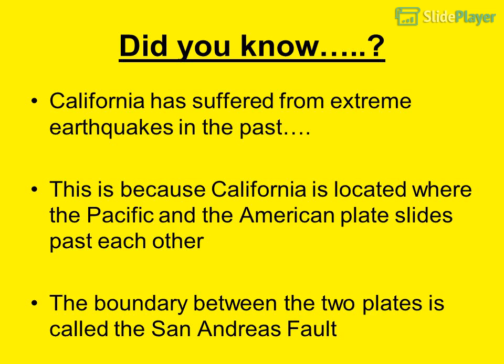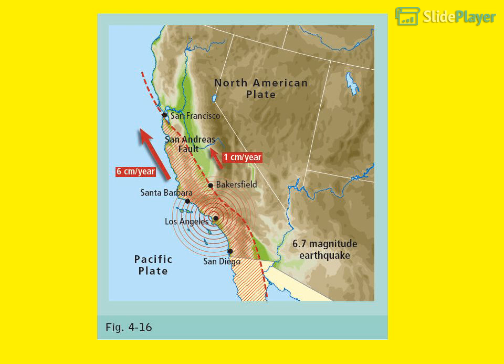Did you know? California has suffered from extreme earthquakes in the past. This is because California is located where the Pacific and the American plate slides past each other. The boundary between the two plates is called the San Andreas Fault.